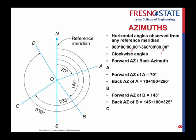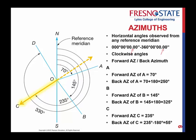Let's take a look at C. The angle there is 235 degrees — that's your forward azimuth. The back azimuth again goes in the opposite direction. Don't just always follow the pattern of adding 180 degrees — look at the sketch. This time, going back the opposite direction, we need to subtract 180. So 235 minus 180 equals 55 degrees.